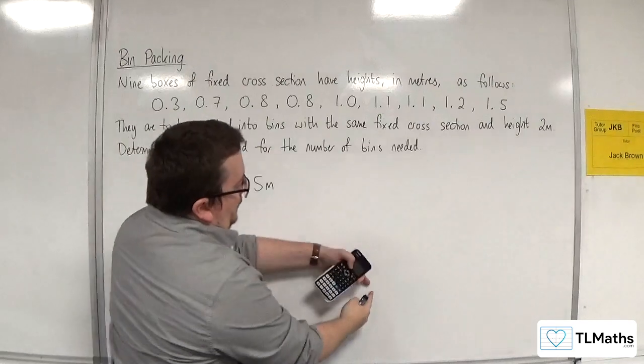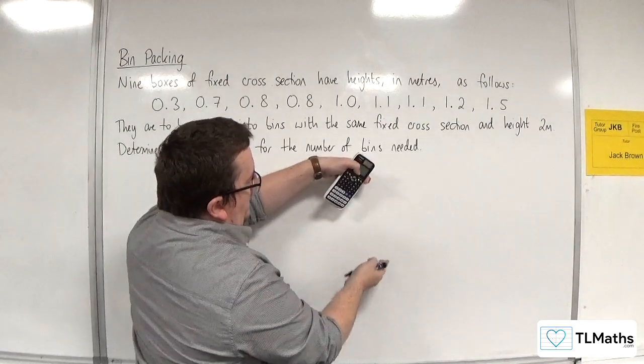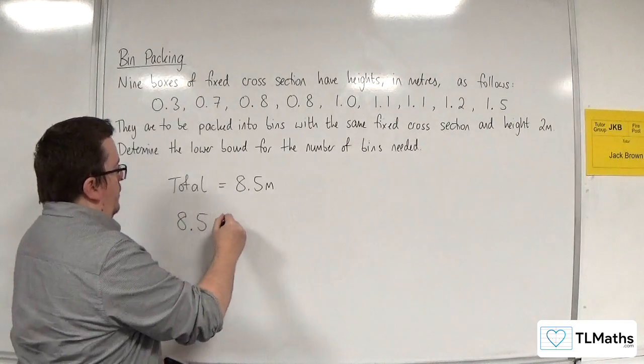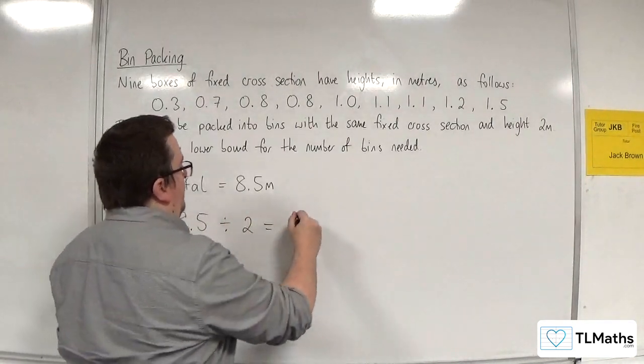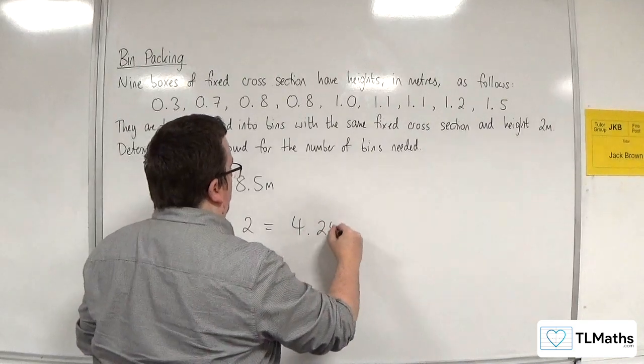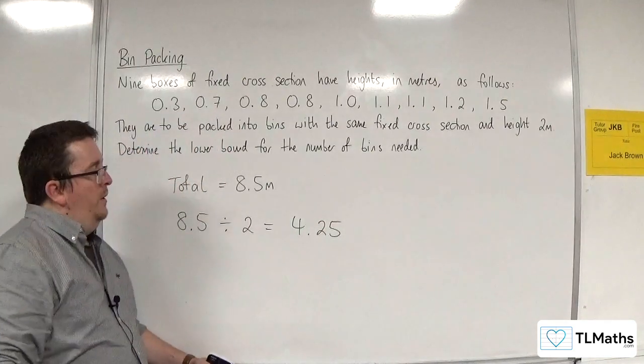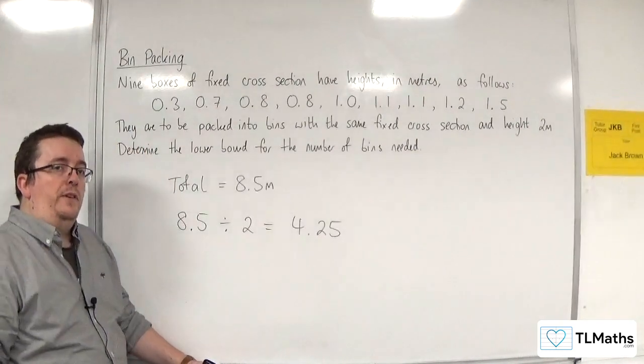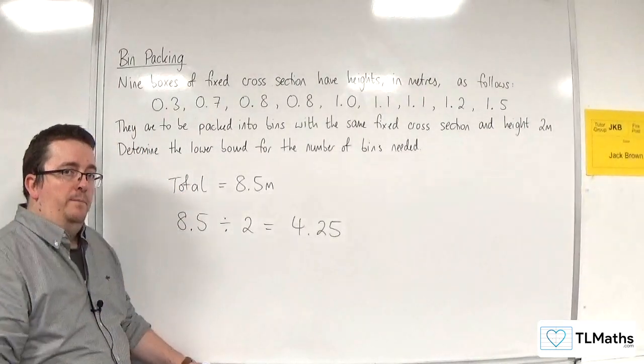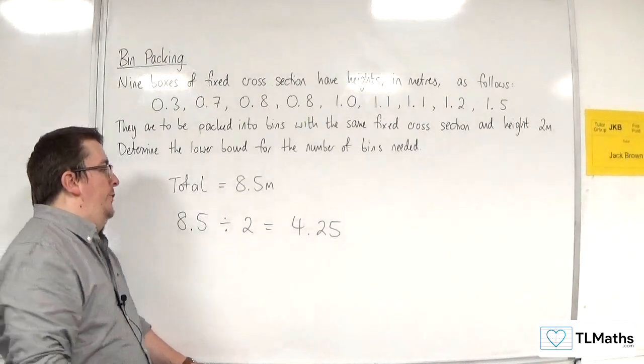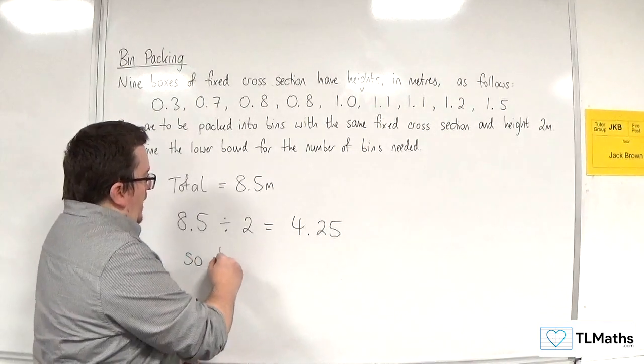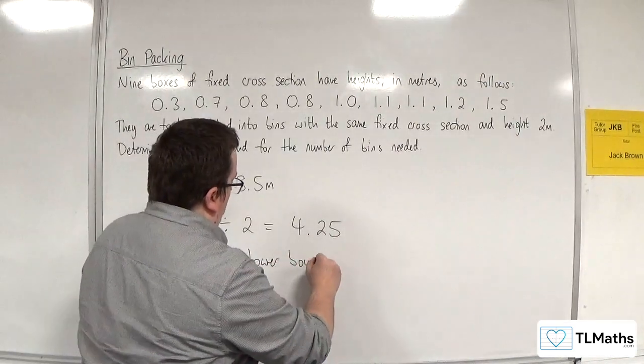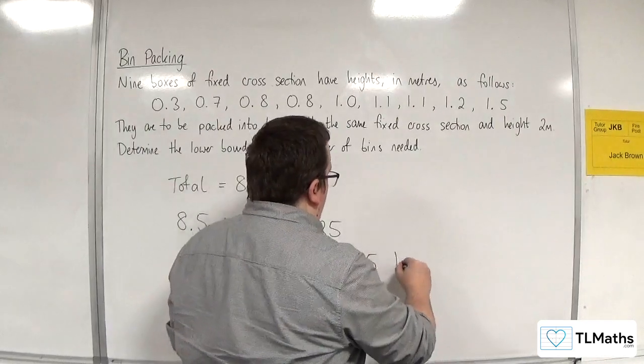So it's 8.5 meters and I'm going to divide that into 2 meter lengths. So 8.5 divided by 2 would get me 4.25. So I would need at least 4.25 boxes in order to fit them in. So the lower bound is 5 bins.